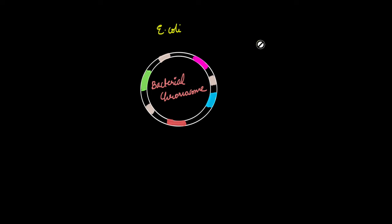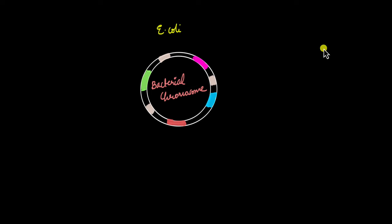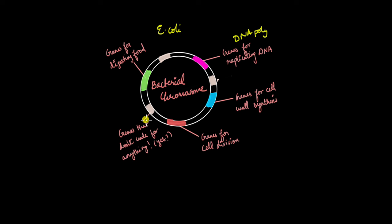For example, it has genes involved in digesting food, genes needed to replicate DNA like the gene that codes for DNA polymerase, genes needed for cell wall synthesis, and genes for cell division. It could also have genes that don't code for any protein, or there might be proteins that we have not discovered yet. Whatever it is, they are all packed within this single chromosome.